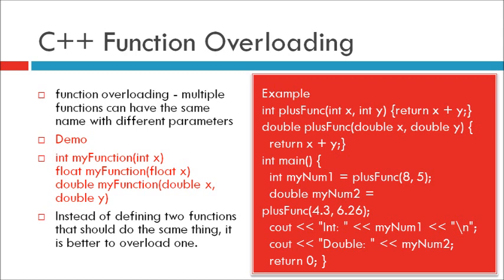Instead of defining two functions that should do the same thing, it is better to overload one. In the example below, we overload the plus function to work for both integer and double. Integer plusFunc in bracket integer x comma integer y, return x plus y. Double plusFunc in bracket double x comma double y, return x plus y. Here the name of function is same but parameters are different. Function overloading does not depend on the return data type, it only depends on the parameters used in the function.